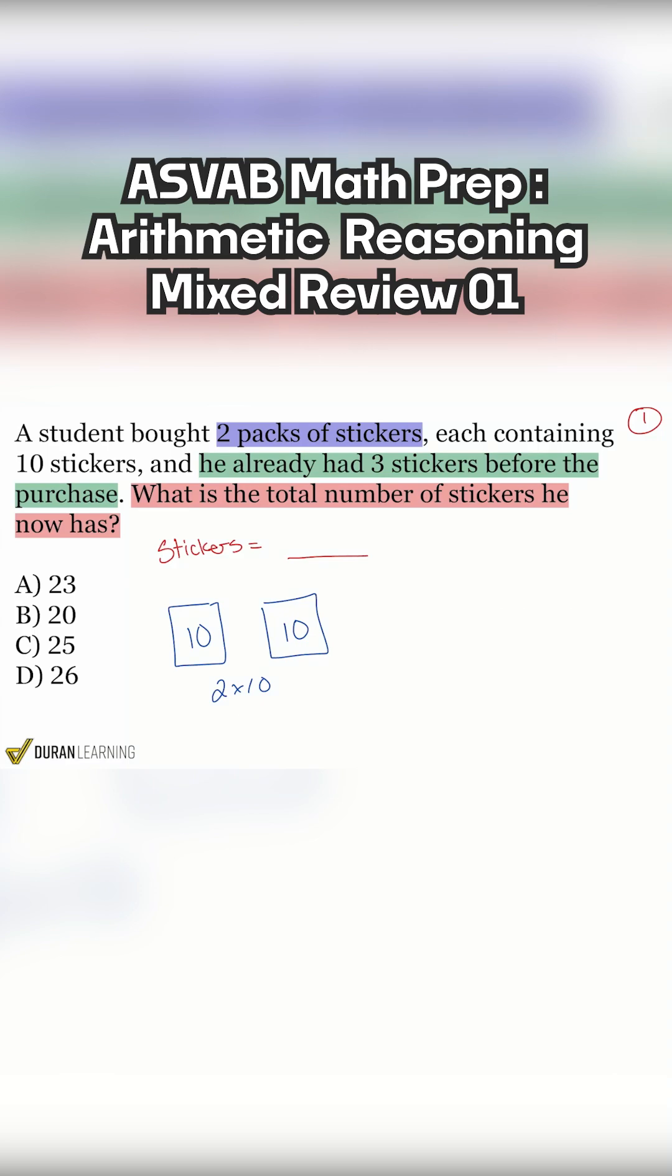We're going to be adding that at the end. Because again, it says he already had three stickers before the purchase. So no matter what number this is, we already had three in the beginning and we'll account for that right over here. Plus three that we already had.